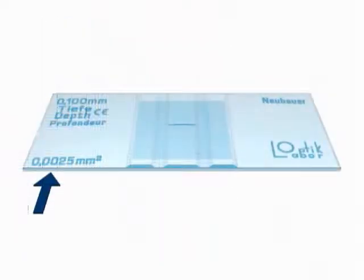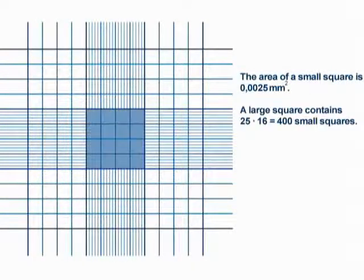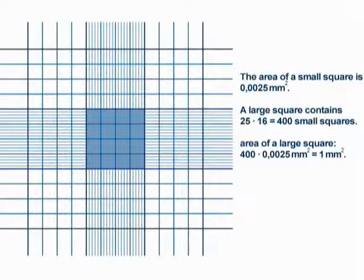Each small square covers the tiny area of 0.0025 mm². Since one large square contains four hundred small squares, it covers the area of one square mm.